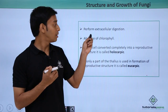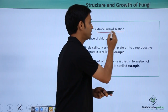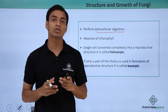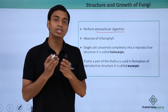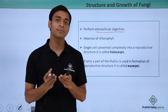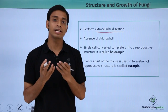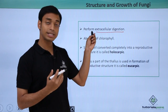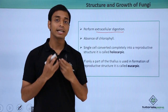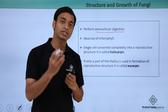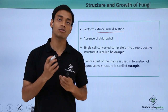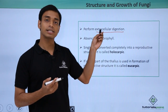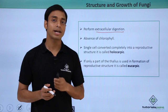Fungi mostly perform extracellular digestion, meaning they are saprotrophic in nutrition. They secrete digestive enzymes into the environment where food is available. These enzymes break down complex food components into simpler components that can be absorbed by the organism. Fungi do not have chlorophyll, so they cannot photosynthesize — they are saprotrophic or can also be parasitic in nutrition.